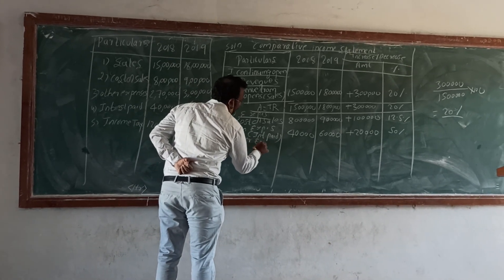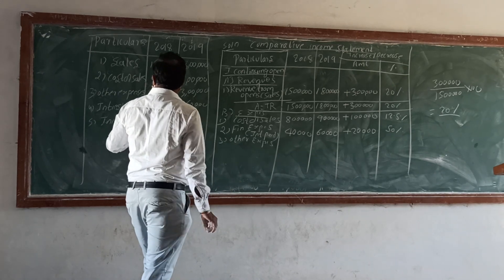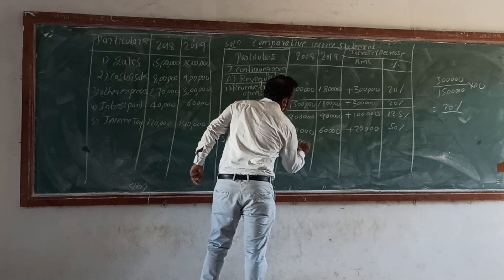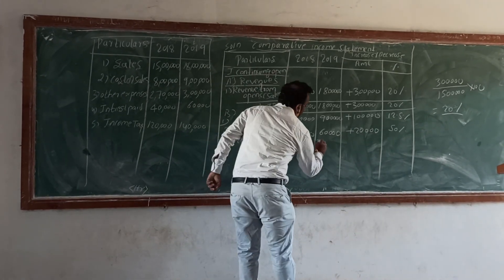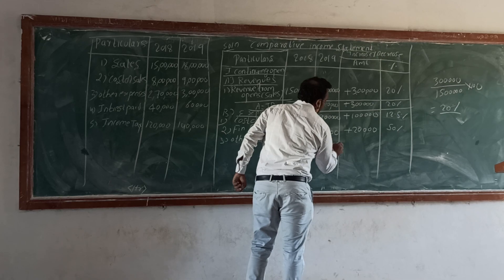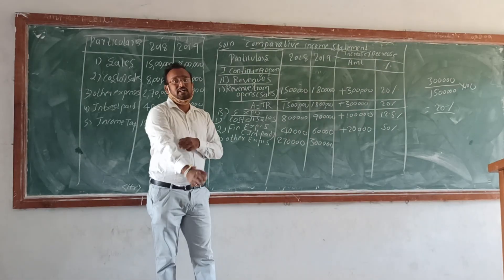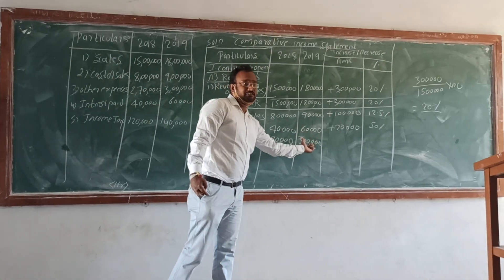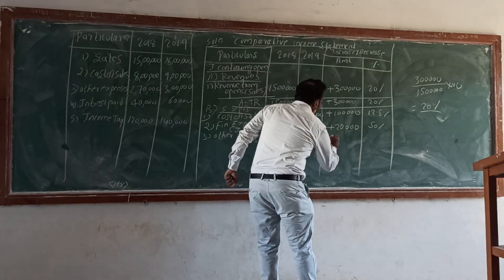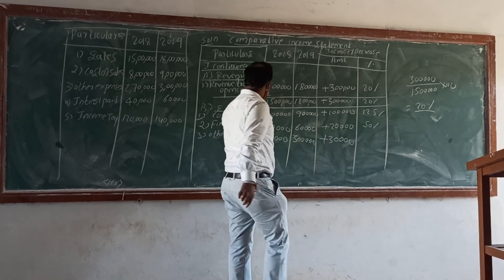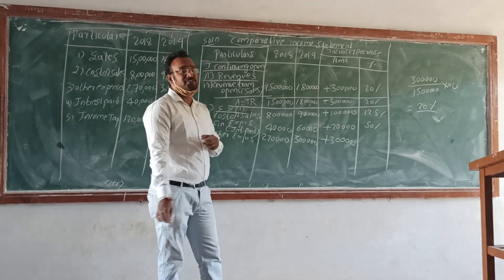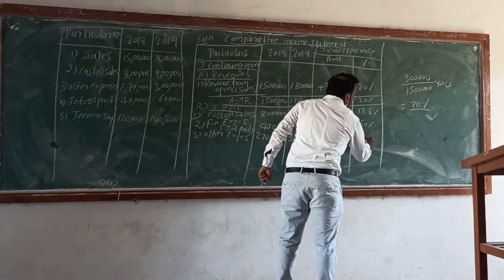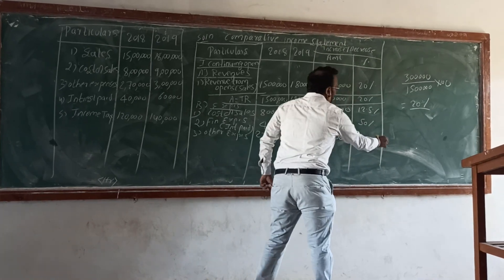Other expenses for the first year are 2,70,000 and for the second year are 3,00,000. The difference is 30,000. The percentage increase is 11.11%.